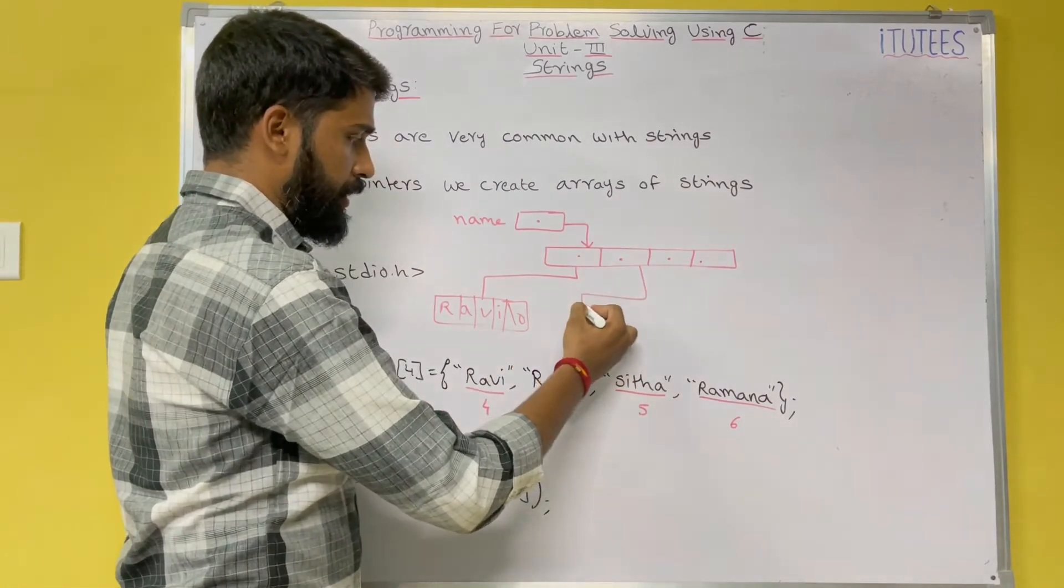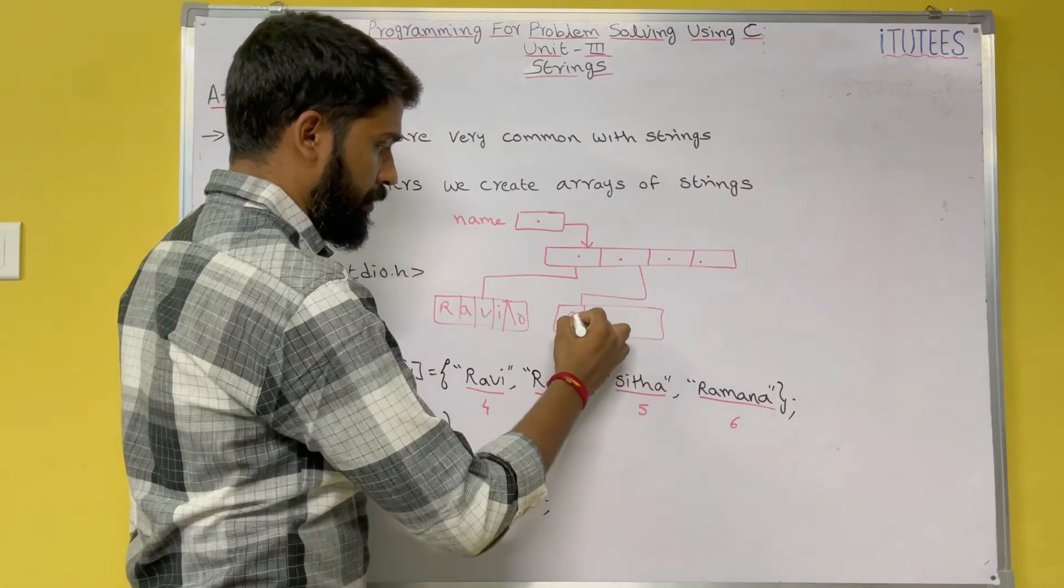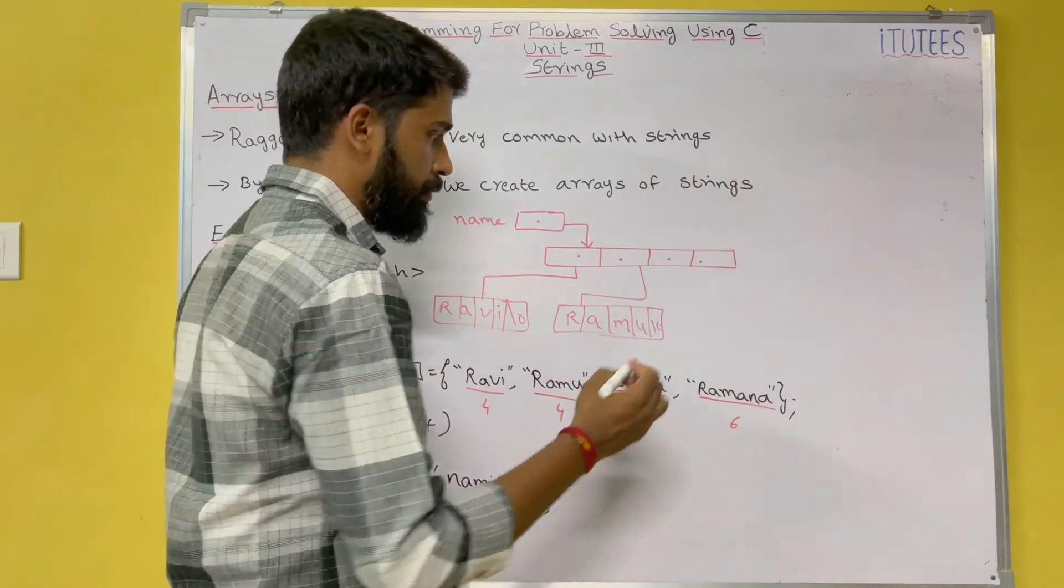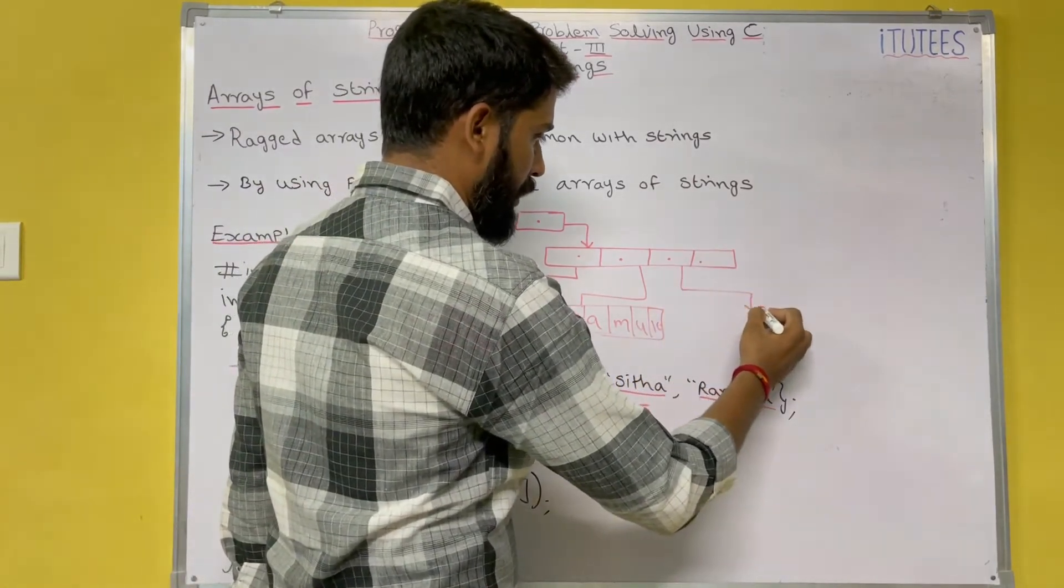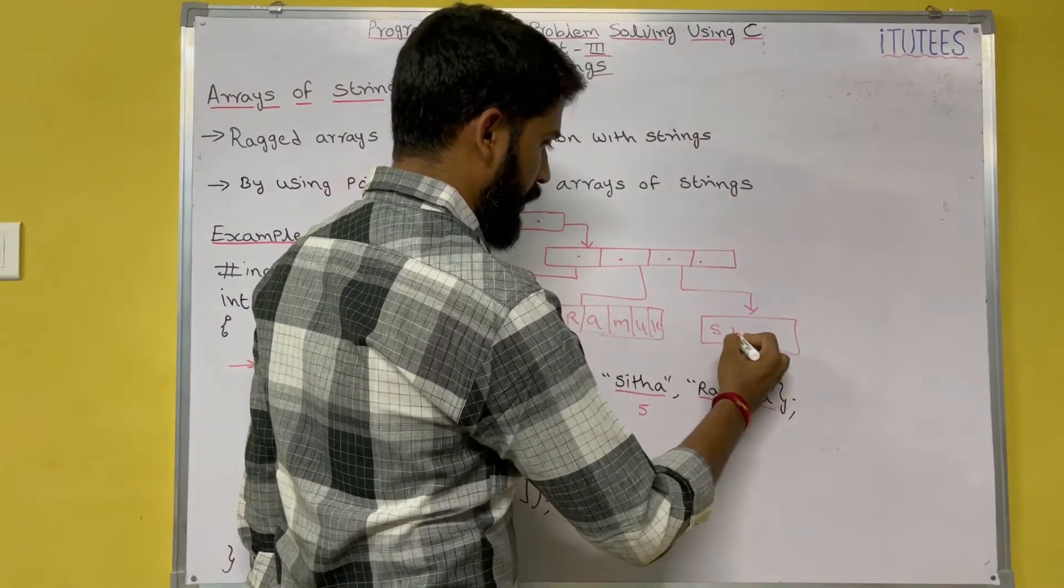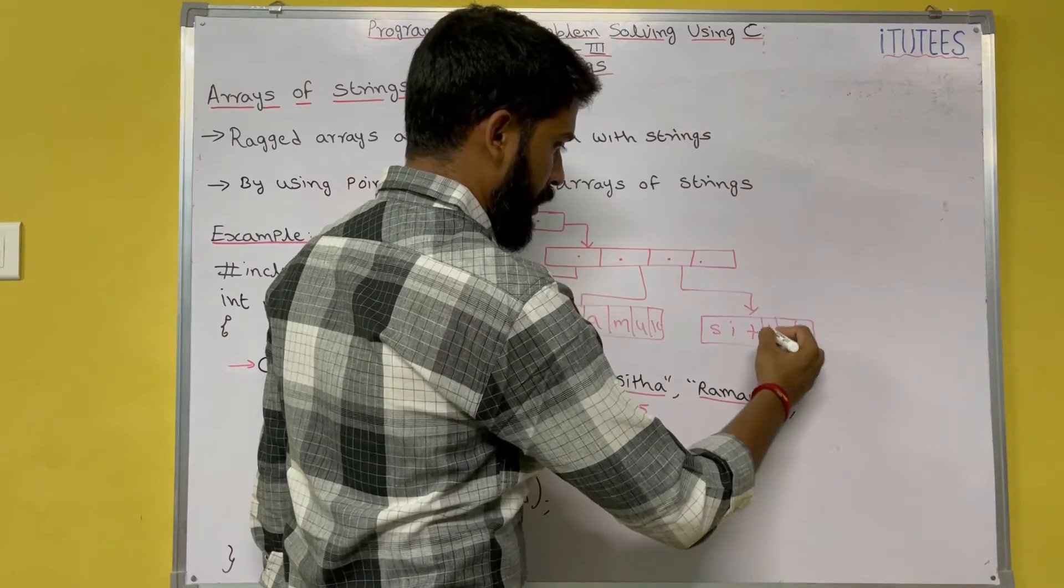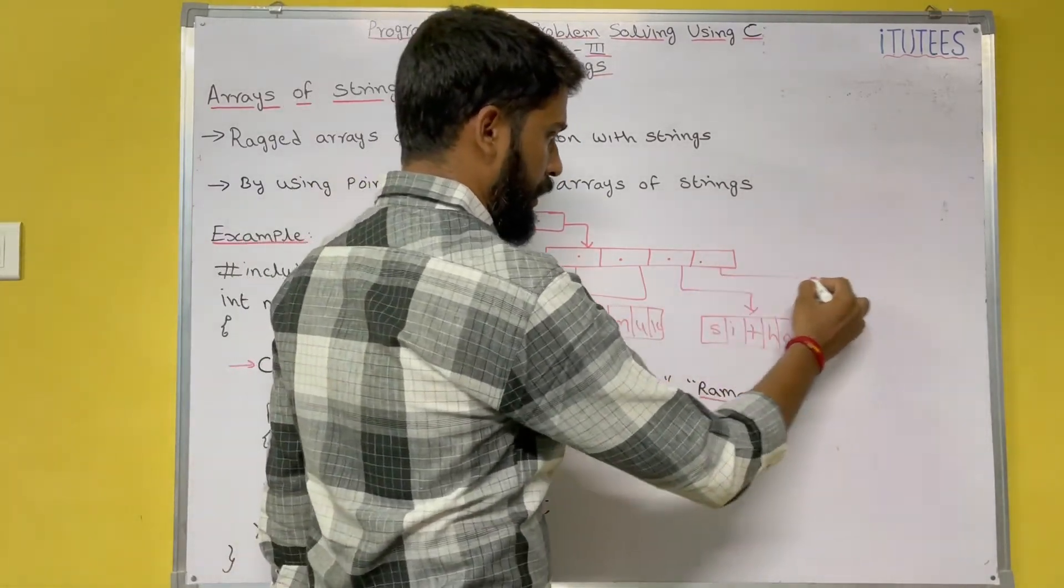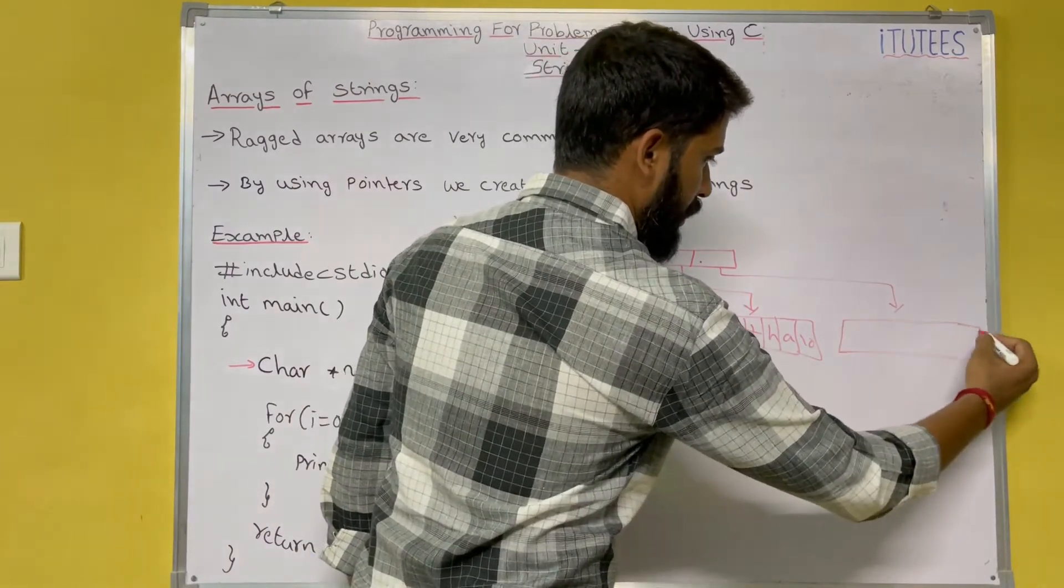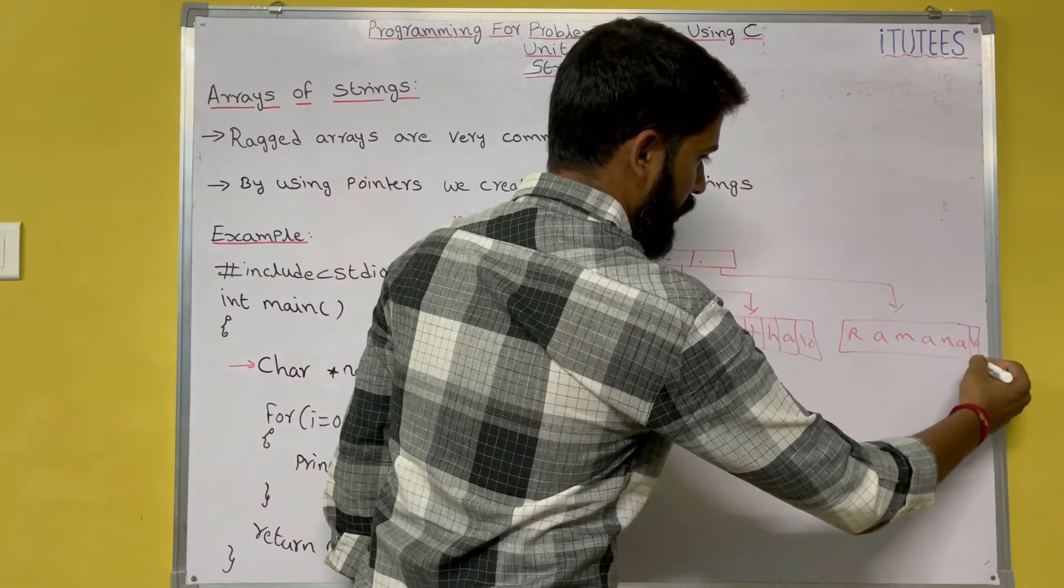Second one indicates another string: Ramu \0. This pointer indicates another string: Sita \0. This pointer indicates another string: Ramana \0.